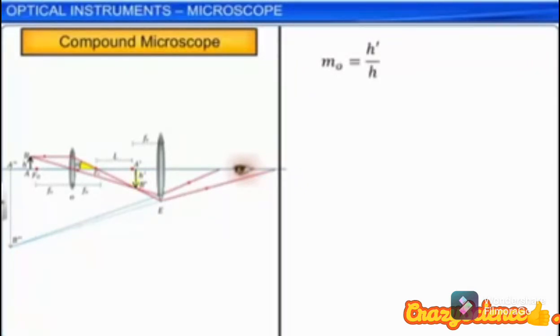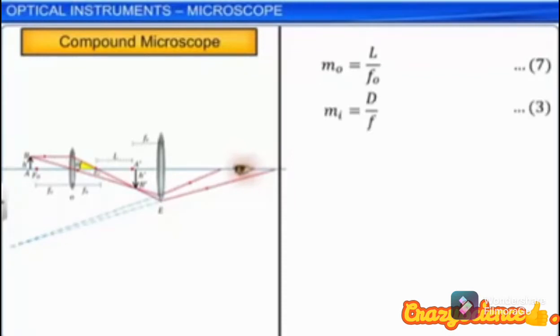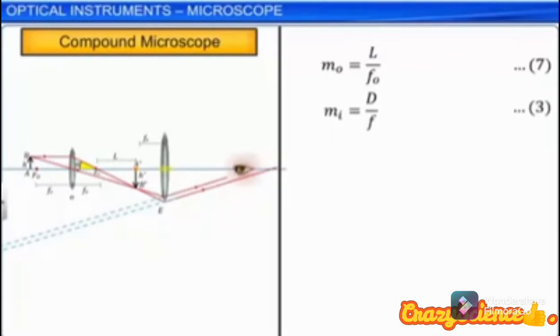If the eyepiece is adjusted such that the image A'B' is formed between the first focus f_e and the optic center of the eyepiece, and it is very close to f_e, then the final image is formed at the far point. Then we say that the compound microscope is set in normal adjustment. Since the eyepiece acts as a simple microscope, using equation 3, we can write the magnification due to the eyepiece m_e equals D/f_e. Let this be equation 8.